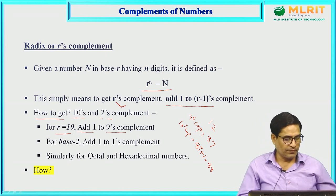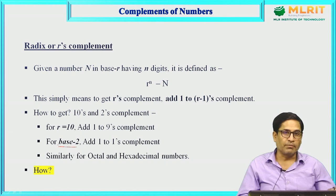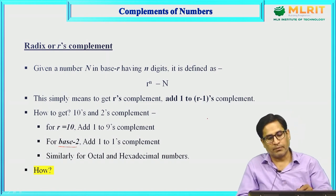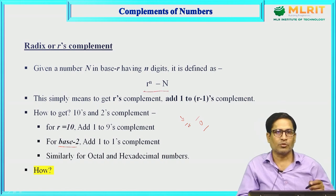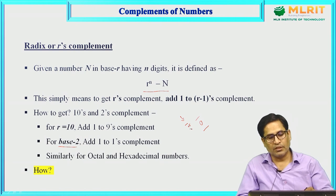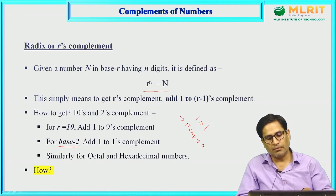For binary (r=2): 2's complement = 1's complement + 1. For N=101, the 1's complement is 010, so the 2's complement is 010 + 1 = 011.